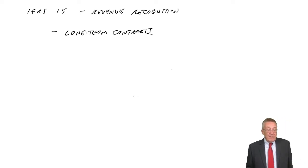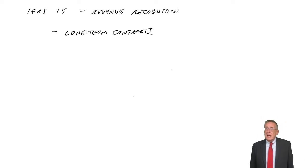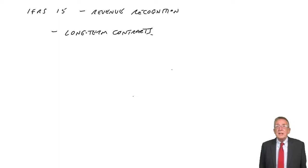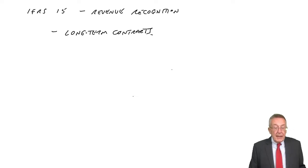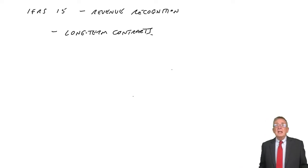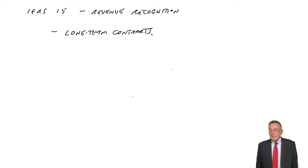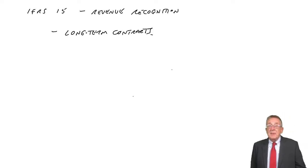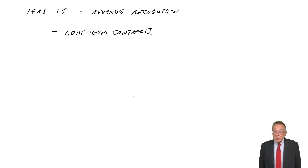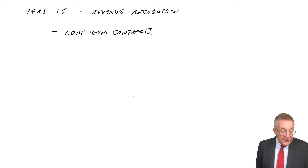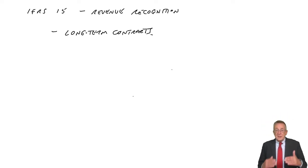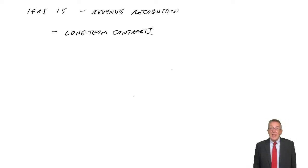The example I'll use is mobile phone contracts. In probably all countries, you can take a contract with the mobile phone company where you sign up for three years and pay a fixed amount each month. Because it's lasting more than a year, the question is when do you actually record the revenue? There are five steps listed, and I'll explain what they mean with the example.